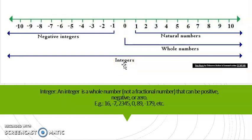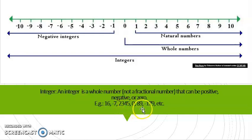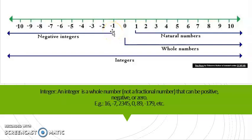A few examples of integers: 16, minus 7, 2345, 0, 89, minus 179. Negative integers can be called minus 1, or also negative 1, negative 2, negative 3, and so on.